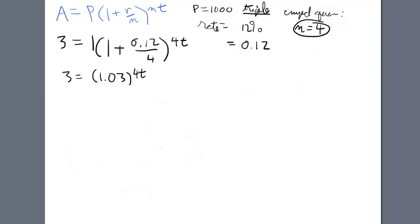So that's when we get the purple pen, and we're like, oh, we got to do log. Why do we do log? Because if we get log 3 equals log 1.03 to the 4t, this exponent here, when you do a log, that becomes a coefficient. What does that mean in English? Log 3 equals 4t log 1.03.